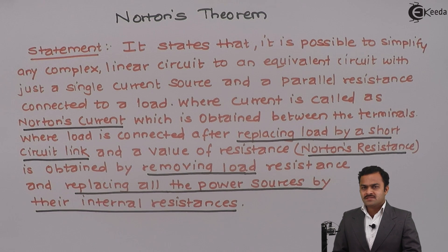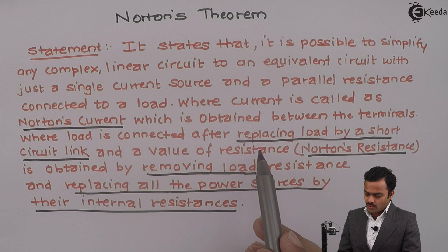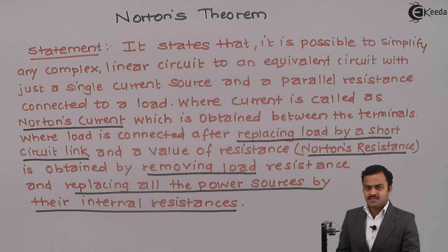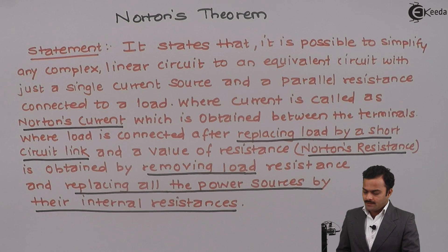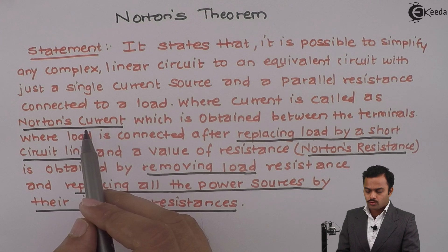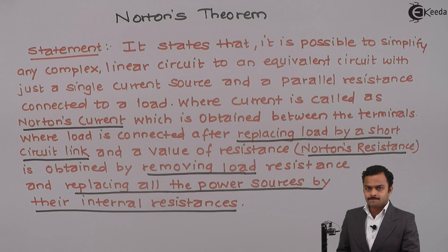The second part of Norton's theorem is the same as the second part of Thevenin's theorem. There is absolute similarity between how to find Norton's resistance and Thevenin's resistance — the only difference is how to get Norton's current.